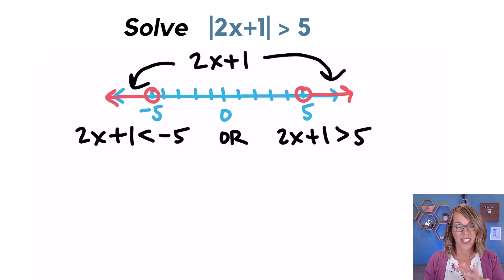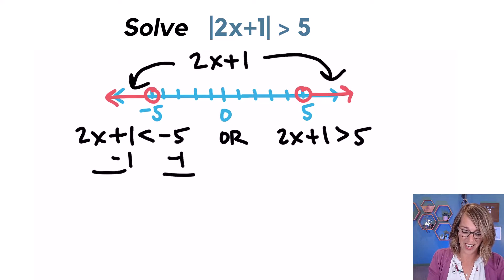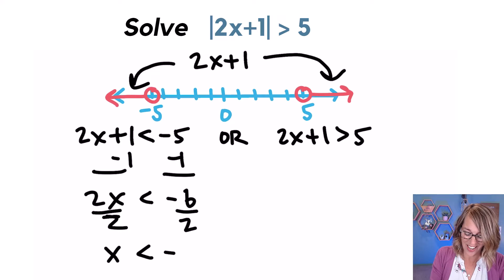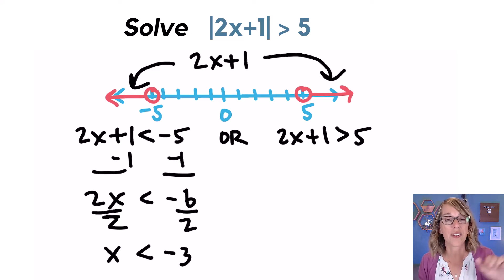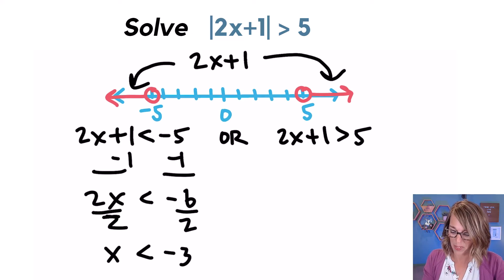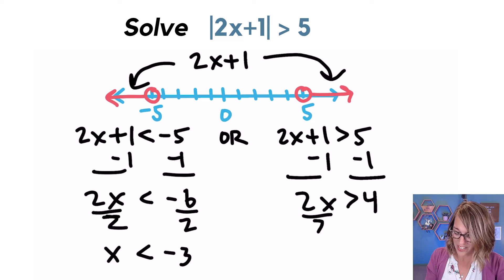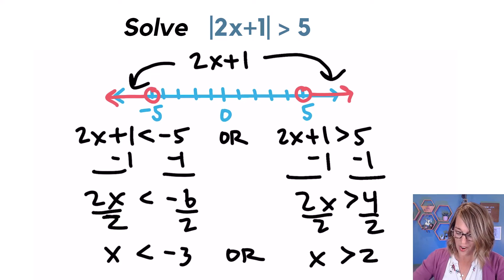This gives me two really nice inequalities to solve. Solving that first inequality, I want to isolate my 2x, so I subtract one from both sides and I end up with 2x is less than negative six. Finally, I divide both sides by two and I get x is less than negative three. Now this is just one part of my solution set. For the other inequality, I subtract one from both sides and I get 2x is greater than four. Divide both sides by two and I get x is greater than two, and I've got that OR in the middle.